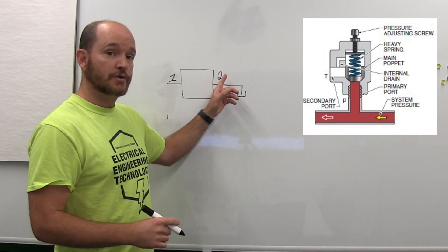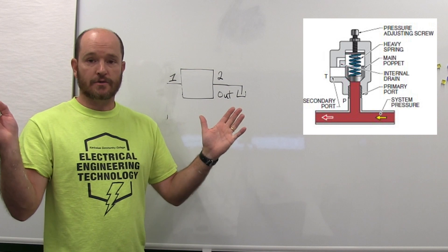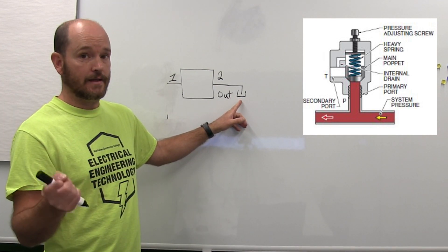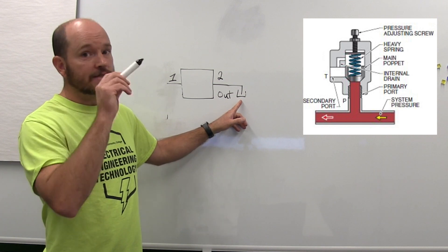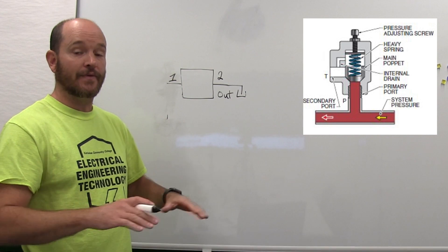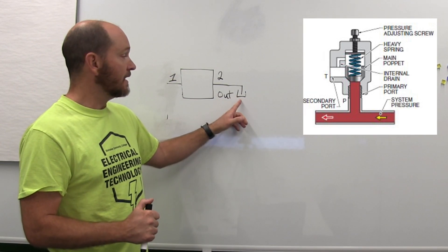Port two always goes to tank. In this case the number two port or the output always goes directly to tank, and it's usually simplified by just drawing the tank symbol right here. Sometimes they like to simplify the diagram and just put that tank symbol there.